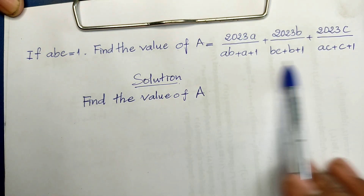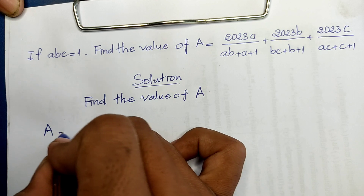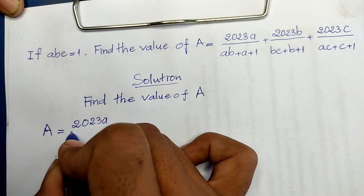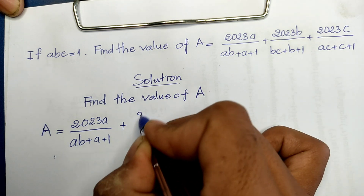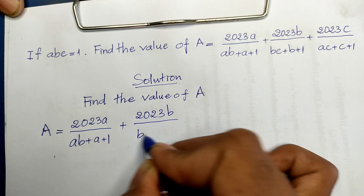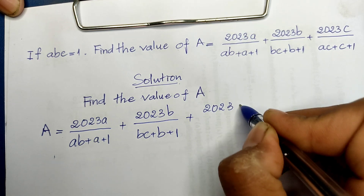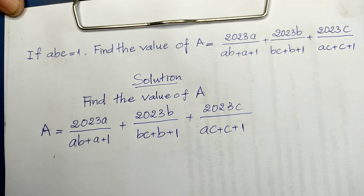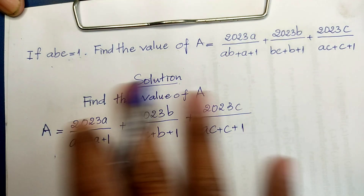The solution: find the value of A. We write it down — we have A equal to 2023a divided by (ab + a + 1), plus 2023b divided by (bc + b + 1), plus 2023c divided by (ac + c + 1). We have abc equal to 1.